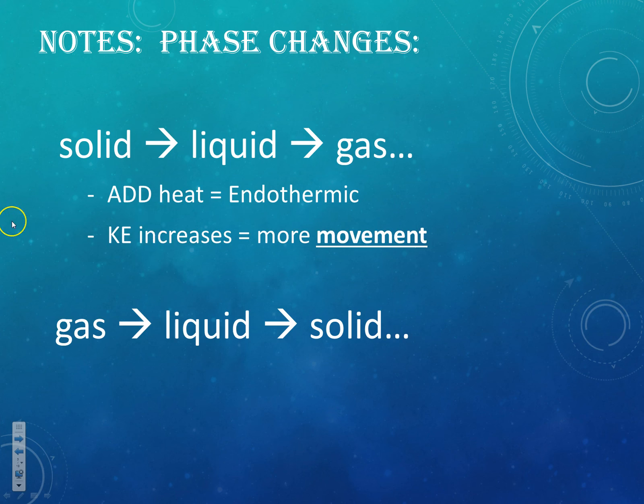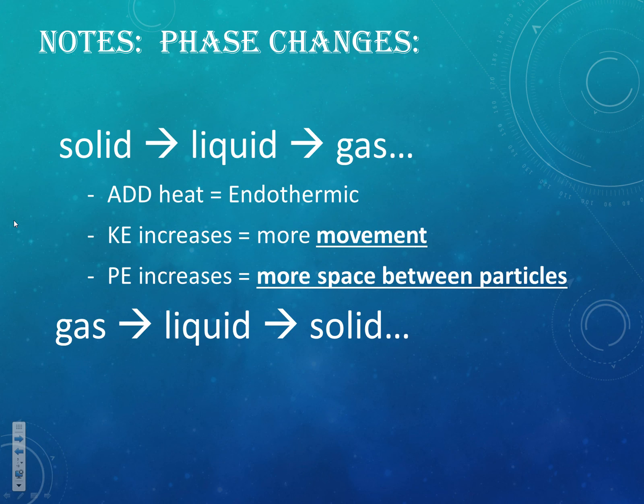Endothermic means two things: first, the kinetic energy is going to increase because the temperature is going up and things are going to be moving more. And the other thing is it's going to change phase, so the potential energy is going to increase, because more space is going to occur between these particles that want to be close together. As you pull two things apart that want to be close together, you're adding potential energy.